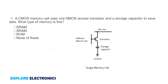A CMOS memory cell which uses one NMOS transistor and a storage capacitor to save data — what type of memory cell is it? You can observe the circuit included here. It uses only one transistor and one storage capacitor. This is a DRAM arrangement, also called a 1T memory cell. It uses only one NMOS transistor and one capacitor. So the answer is DRAM.